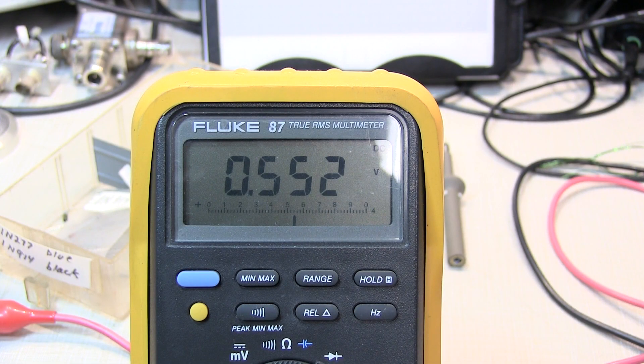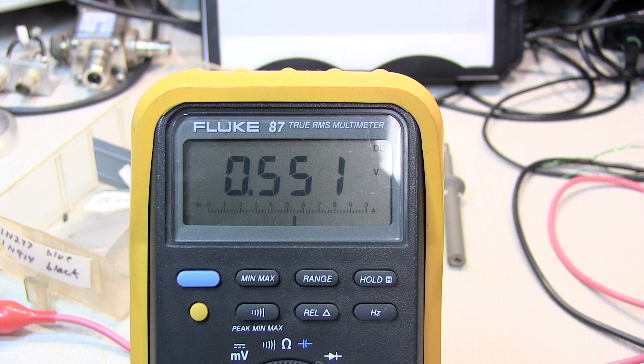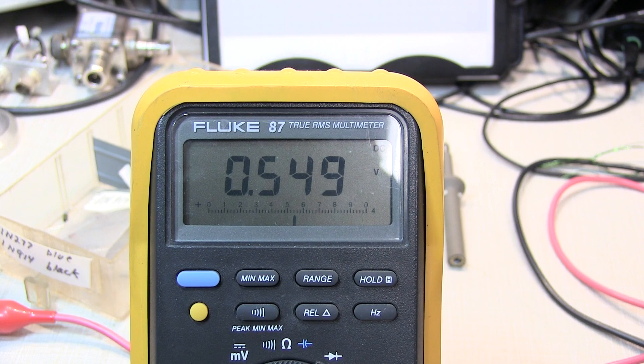So here's a simple example illustrating that temperature coefficient, or the temperature effect. I've got the diode connected up to the meter here, but I simply exhale on it, you can see I made nearly a 10 millivolt change by simply breathing on the diode and changing its temperature. So you do have to watch that when you're applying the circuit in your application.